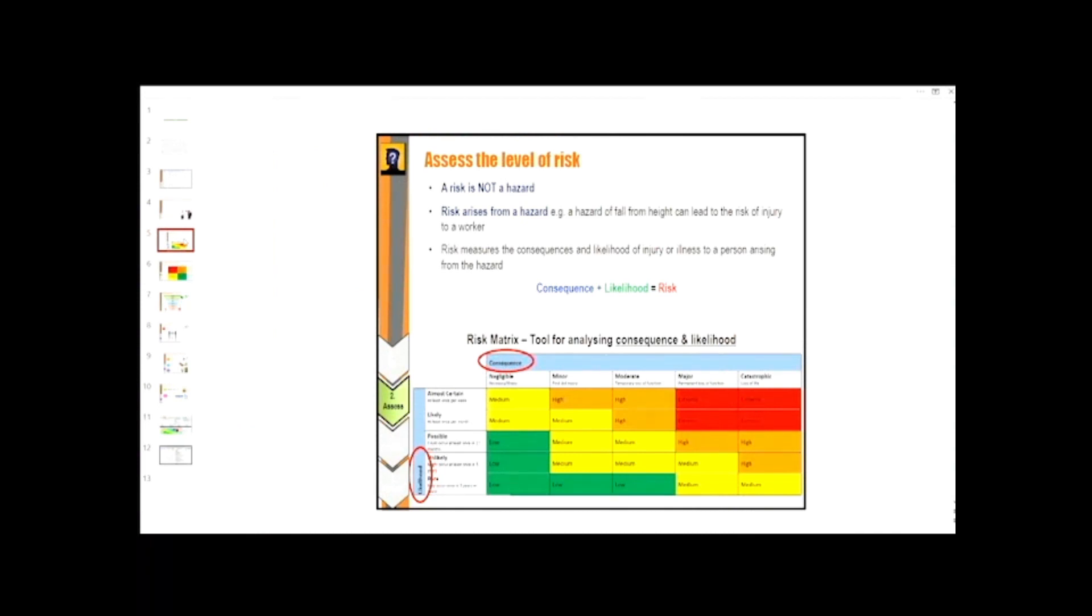Let's look at the risk matrix to assess the level of risk. A risk is not a hazard. A risk arises from a hazard. For example, a fall from height can lead to the risk of injury to a worker. So a risk measures the consequence and likelihood of injury or illness to a person arising from the hazard. The hazard of falling from height could be catastrophic because it could result in loss of life.